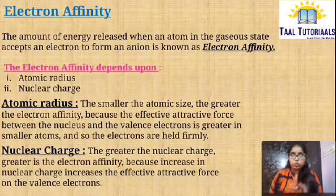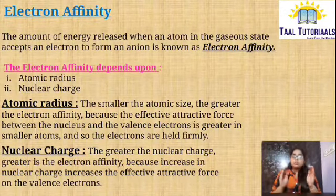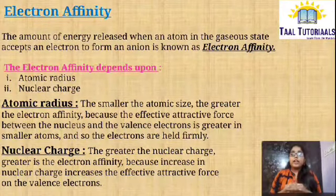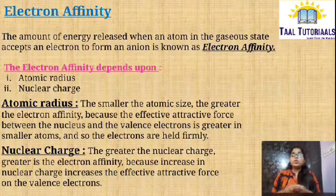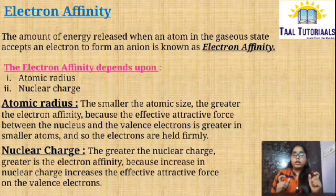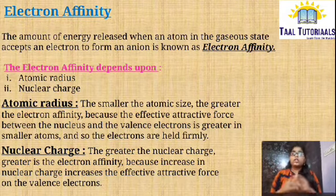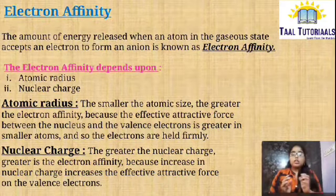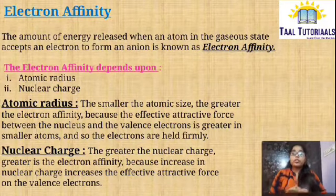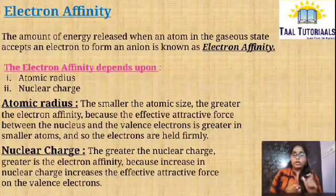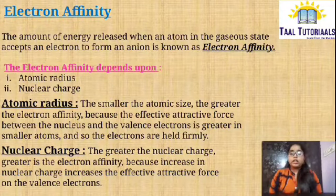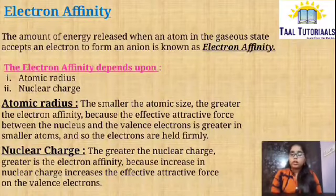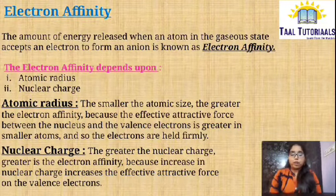Electron affinity depends upon two things: atomic radius and nuclear charge. Regarding atomic radius — the smaller the atomic size, the greater the electron affinity, because there is an effective attractive force between the nucleus and the valence electrons. There is less distance between the nucleus and outermost shell, so the nuclear pull is greater in smaller atoms.